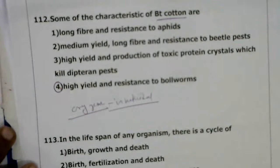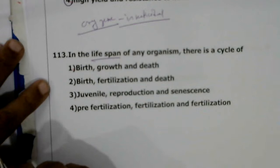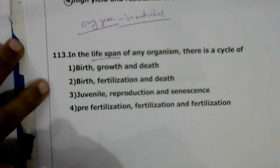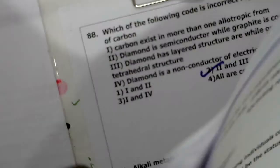Next question: in the lifespan of any organism, there is a cycle of — ? The lifespan is the period from birth to natural death. During the lifespan, an organism shows birth, growth, and finally death. The correct answer is the first option.